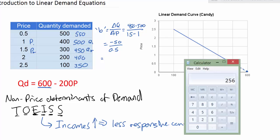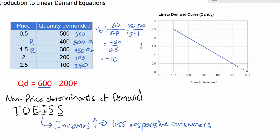Using the calculator: negative 50 divided by 0.5 gives us a B variable of negative 100. That can now be plugged into our demand equation, giving us a new demand equation of Qd equals 600 minus 100P.